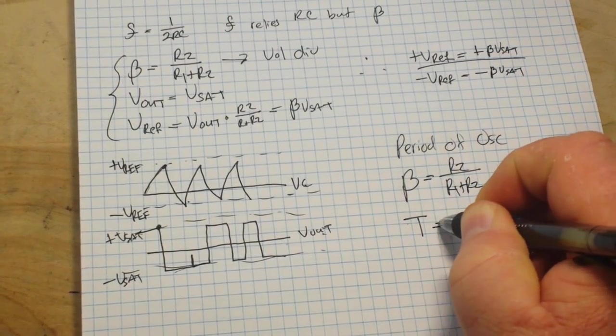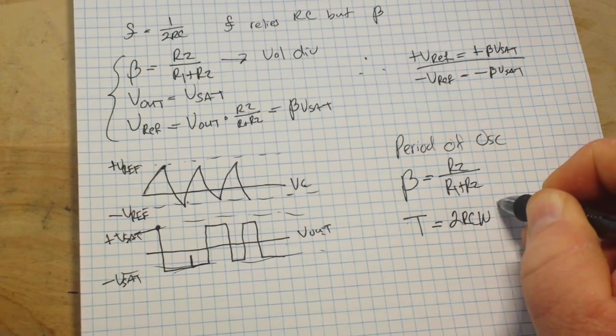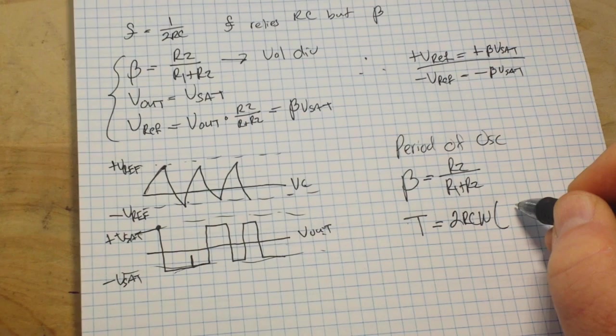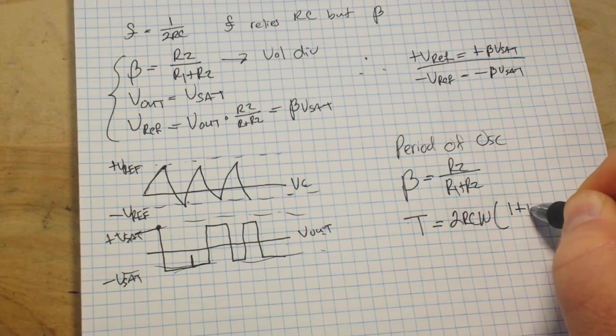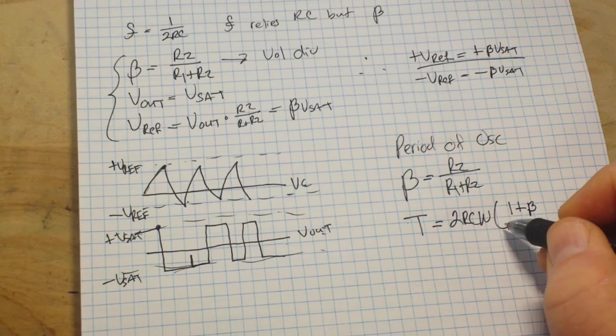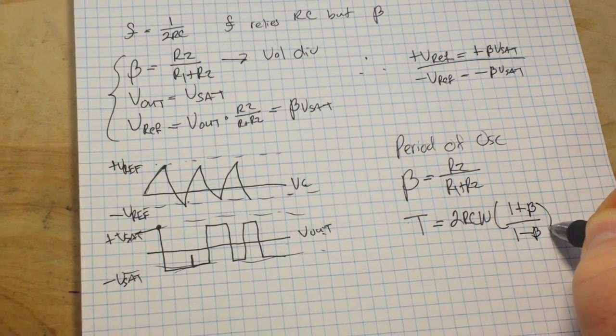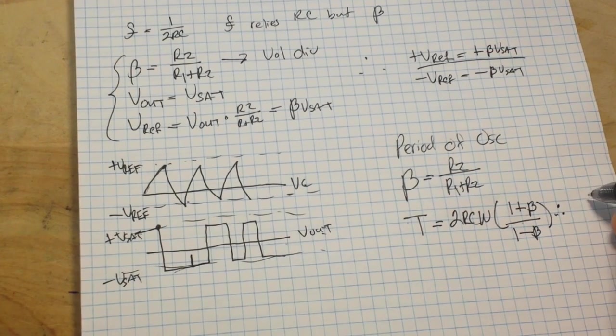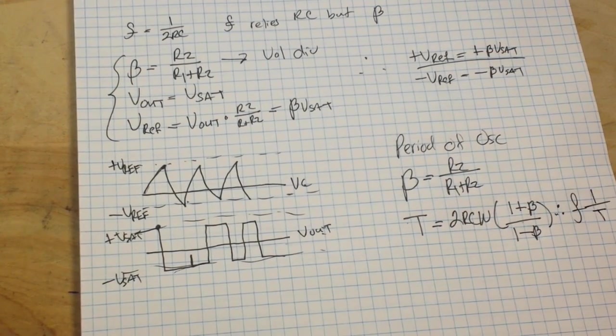Then we need to know time, which is going to be 2RC times the natural log of 1 plus β over 1 minus β. And that's going to give us our frequency of 1 over T, okay?